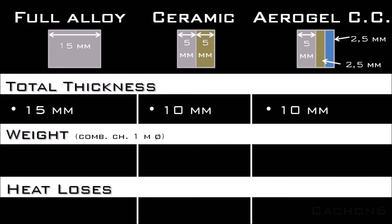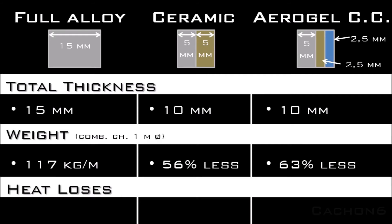The weight comparison is made starting from a combustion chamber of 1 meter in diameter. Our baseline case weighs 117 kg per meter of length. With the ceramic case, we save 56%, and with the aerogel we achieve a 63% reduction. Heat losses are reduced by 94% with ceramics, and with the use of aerogel, a 99.9% reduction is achieved.